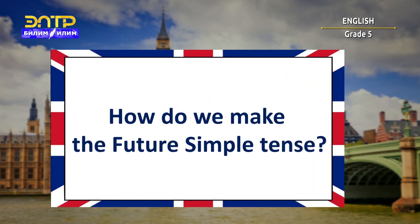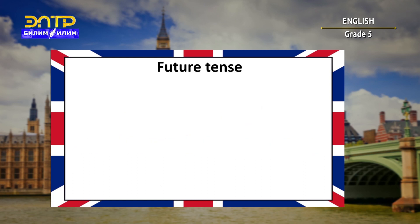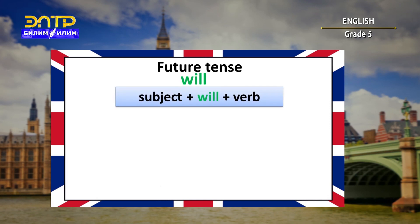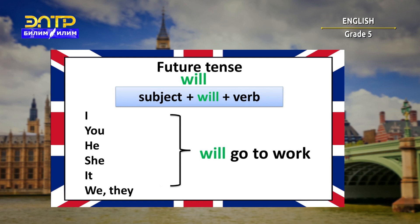Children, how do we make the future simple tense? It is very easy to make up sentences in future simple tense. It is formed with the auxiliary verb will, and the structure is subject plus will plus verb.